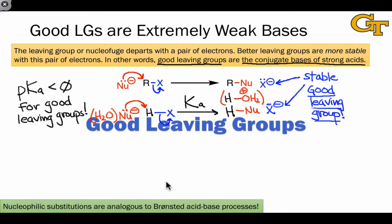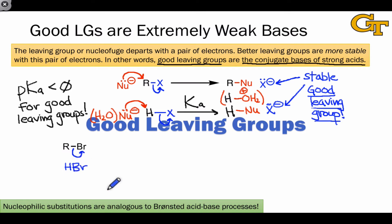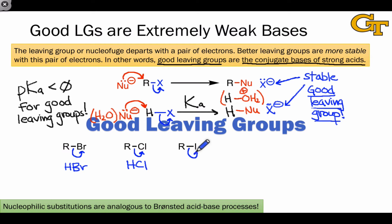Let's look at a few practical examples of good leaving groups. Alkyl bromides are great electrophiles because bromine is a great leaving group. Why? Because the conjugate acid of bromide — the molecule generated when Br departs with a pair of electrons — is HBr, a strong acid. The situation is exactly analogous for RCl, which is also a great electrophile because the conjugate acid of chloride, HCl, is again a strong acid. Alkyl iodides are great electrophiles as well, because the conjugate acid of iodide, HI, is a strong acid.